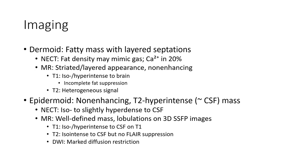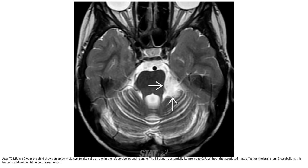Epidermoid appears as a non-enhancing T2 hyperintense mass. On non-contrast CT, it is iso- to slightly hyperintense to CSF. On T1, it is iso- to hyperintense to CSF. On T2, it is iso-intense to CSF but without FLAIR suppression. DWI shows marked diffusion restriction.